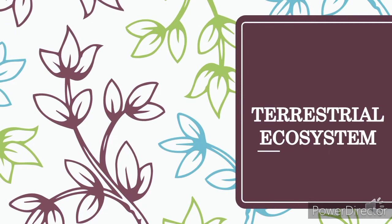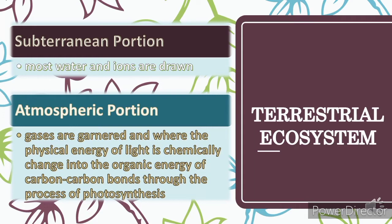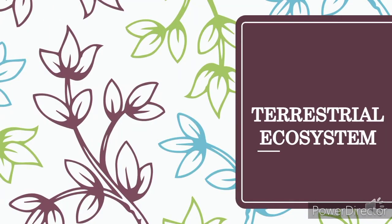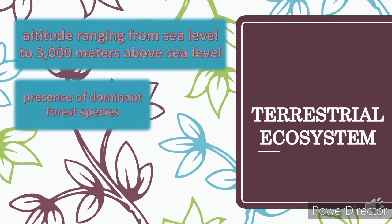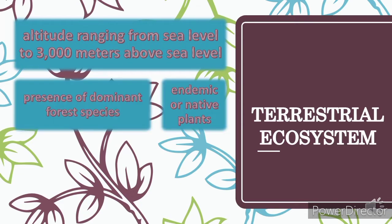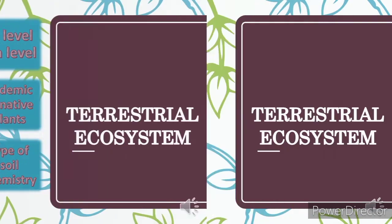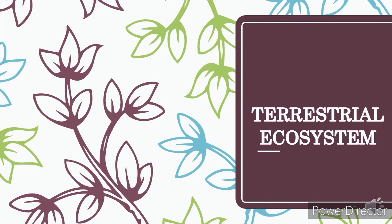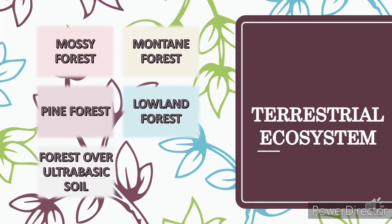Terrestrial ecosystems are divided into a subterranean portion where most water and ions are drawn, and an atmospheric portion where gases are gathered and where light energy is converted to organic energy through photosynthesis. They are classified based on altitude ranging from sea level to 3,000 meters above sea level, presence of dominant forest species, endemic or native plants, amount of soil nutrients and moisture, type of soil minerals, and type of soil chemistry. In this video, we will discuss types of terrestrial ecosystems in the Philippines: mossy forest, montane forest, pine forest, lowland forest, forest over ultra-basic soil, and beach forest.